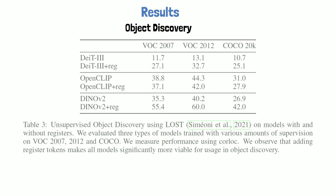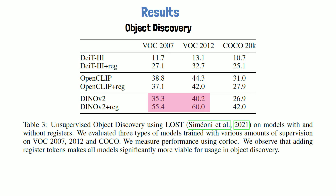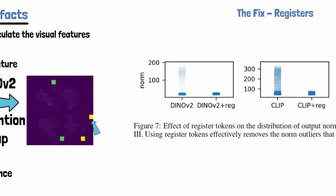There are also results for object discovery in the paper. DINOv2 with registers achieves a better score by 20 points compared to without registers, which is impressive. However, DINOv1 is missing from this table, and when adding it, we can see it still achieves better results than DINOv2 with registers.